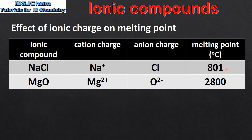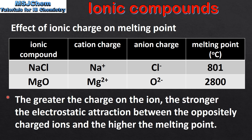If we compare the melting points, sodium chloride has a melting point of 801°C while magnesium oxide has a melting point of 2800°C. So the greater the charge on the ion, the stronger the electrostatic attraction between the oppositely charged ions and the higher the melting point.